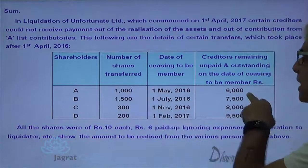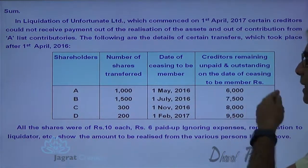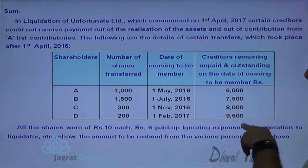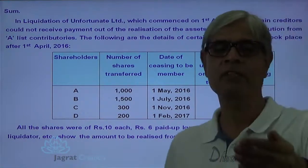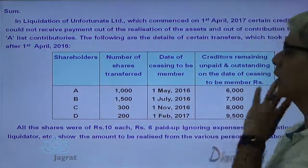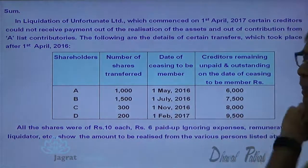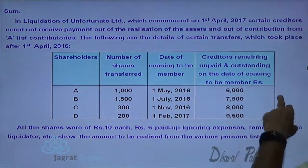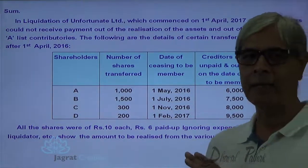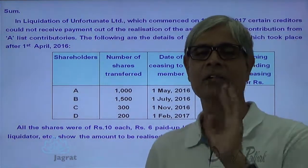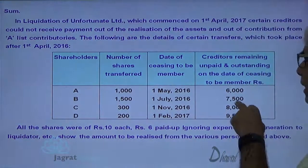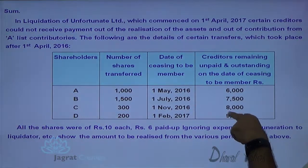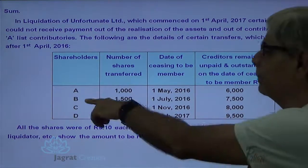A will contribute for the 6,000 liability. Whatever liability increased from 6,000 to 7,500, from 7,500 to 8,000, from 8,000 to 9,500 — all subsequent increases in liability, A will not contribute for. Similarly, B has to contribute for the liability that existed as at the date of its transfer, which is 7,500. So for 7,500 liability, B can be asked to contribute to the extent of unpaid capital. But whatever liability increased after 1st of July 2016 — 500 and 1,500 subsequent increases — B is not supposed to contribute for those.